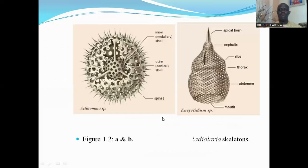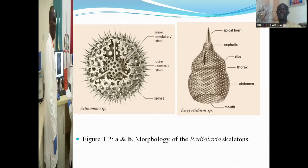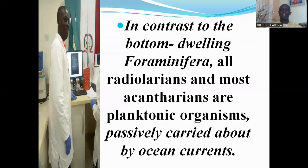These are various shapes of radiolarian exoskeletons. The radiolarians have both intracapsular and extracapsular zones; they have definite shapes and can be either radially or bilaterally symmetrical. In contrast to the bottom-dwelling foraminifera, all radiolarians and most acantharea are planktonic organisms, passively carried about by ocean currents, forming a major part of the zooplankton population.